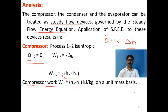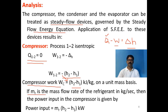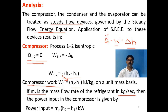The compressor work is negative work (work input), so when expressing it directly as work of compression, we write it as H₂ − H₁. If the mass flow rate of the refrigerant is given as ṁᴿ (kg/s), then the power input to the compressor is: Power = ṁᴿ × (H₂ − H₁) in kilowatts.